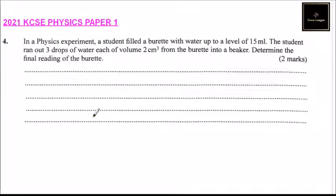Question number four. In a physics experiment, a student filled a burette with water up to a level of 15 ml. The student ran out three drops of water, each of volume 2 cm³ from the burette into a beaker, determining the final reading of the burette.